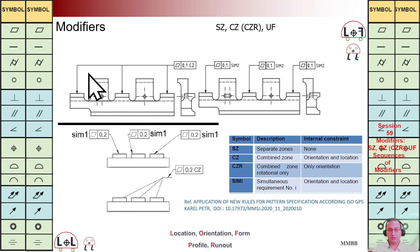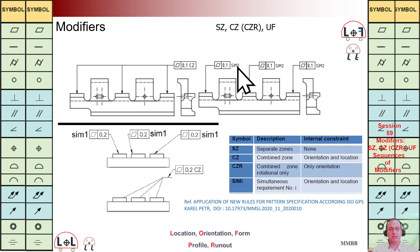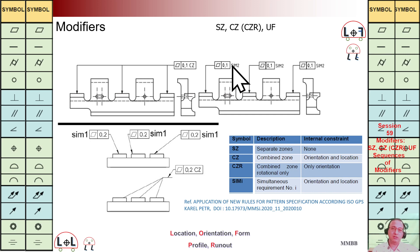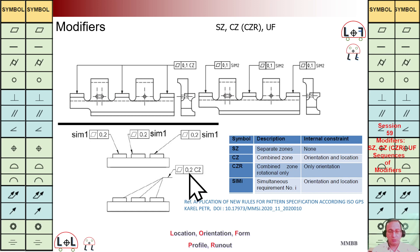Here we see at top left three surfaces with flatness TZ of 0.1 and combined zone. Equivalently, we can write "flatness 0.1 SIM 2." These two figures are equivalent — we control orientation and location of the three surfaces because it is combined zone. Another example at bottom left again has flatness 0.2 with combined zone, which can equivalently be written as "SIM 1.1.1" — the meaning of these two figures is exactly the same.